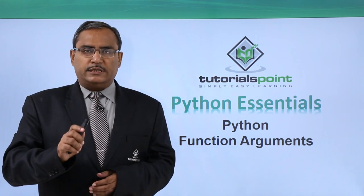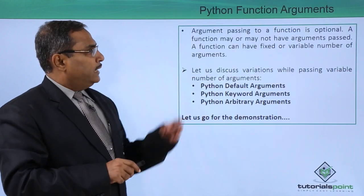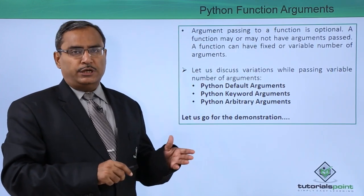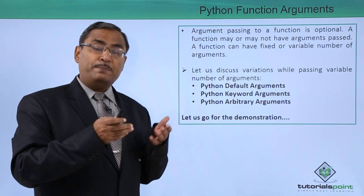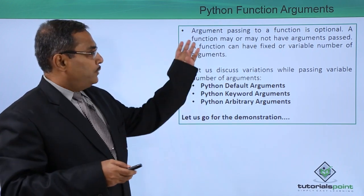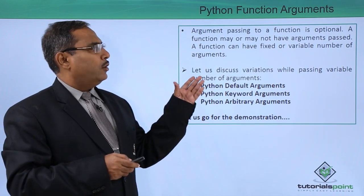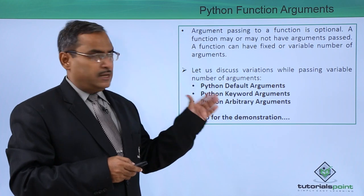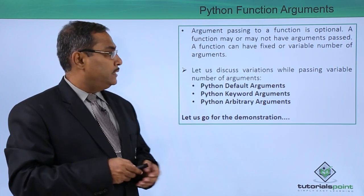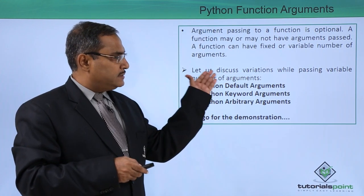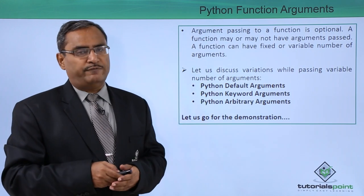In this session, we are going to discuss Python function arguments. We know that passing arguments to a function is optional. We may not pass any argument, or we may pass one or more than one arguments. Argument passing to a function is optional; a function may or may not have arguments passed. A function can have a fixed or variable number of arguments.